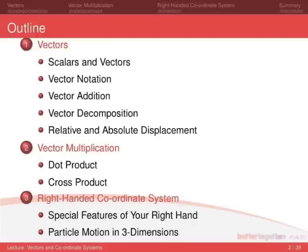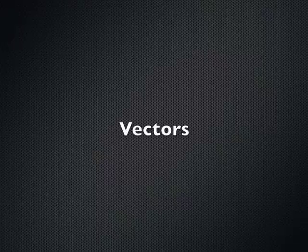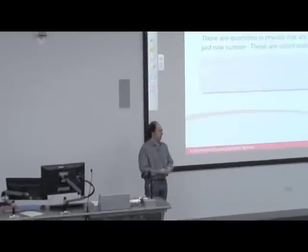Scalars and vectors. Essentially there are two quantities in physics. Scalars are one of them and basically they're just a quantity that's determined by just one number. A scalar is something like mass, temperature, or speed. If something's 5 kilograms, there's nothing more we need to know about that mass. The other type of quantity in physics is where you need more than one number to fully describe it. These are things like displacement, velocity, acceleration, and force.